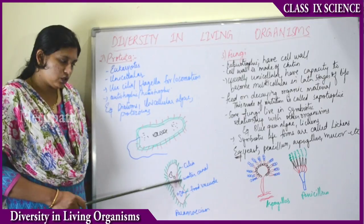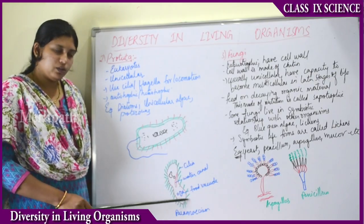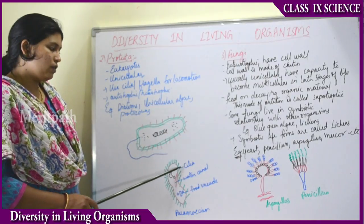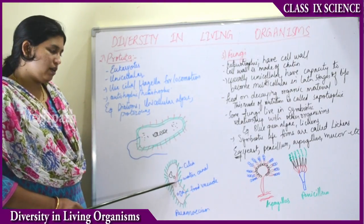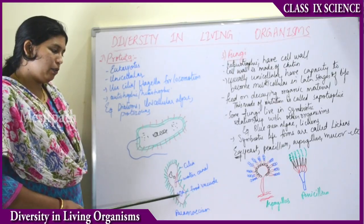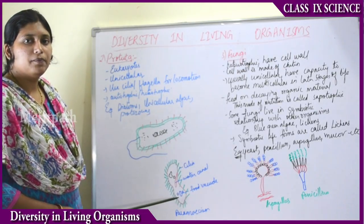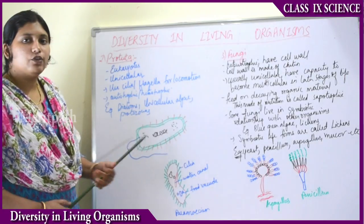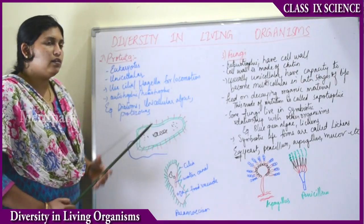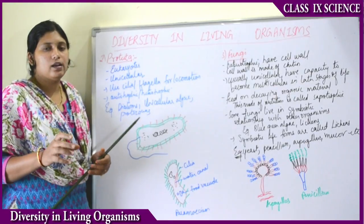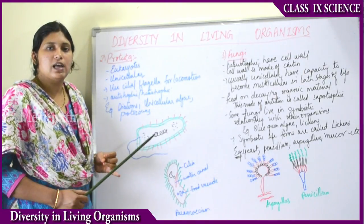The structure of paramecium looks like this. It has cilia all around the body — hair-like structures which help in locomotion. Inside the body there is a water canal and a food vacuole for the intake of food and for the removal of waste from the body. A common unicellular organism we know is amoeba.